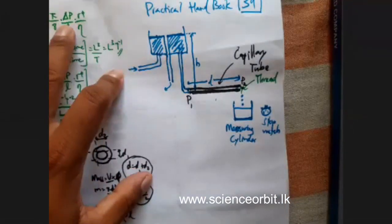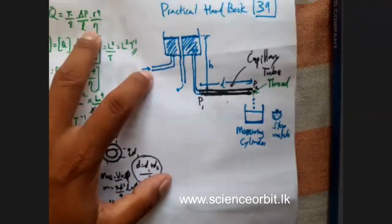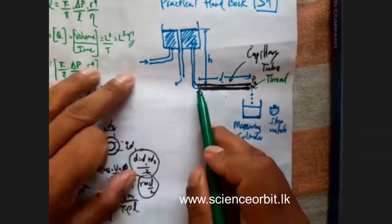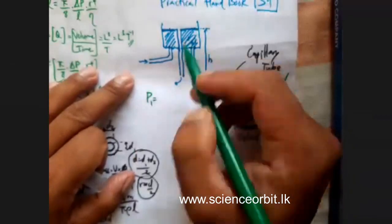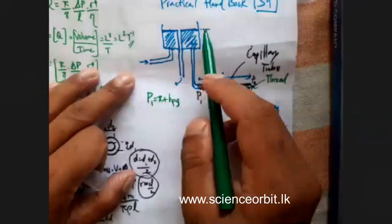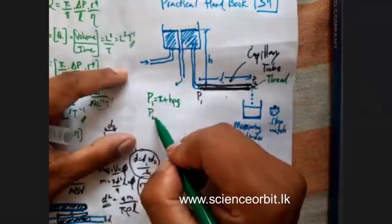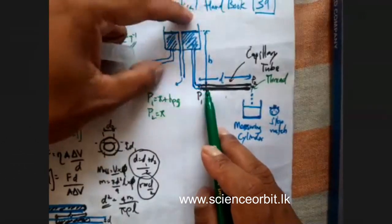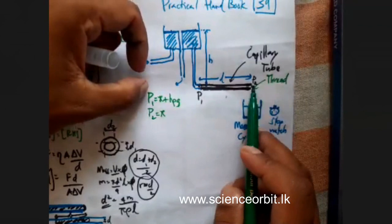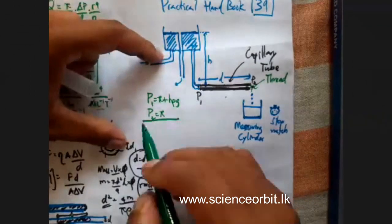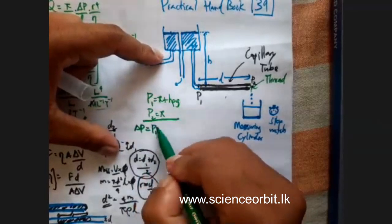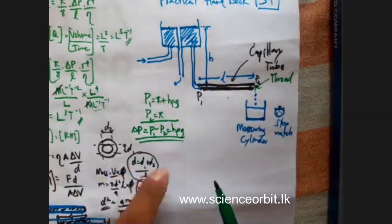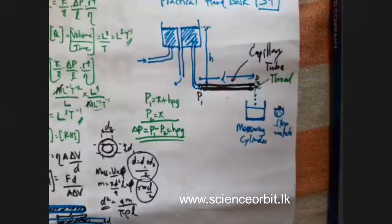Our purpose is finding eta, so let's talk about pressure difference. Pressure at P1 is atmospheric pressure plus H-rho-g. Pressure at P2 is a point exposed to air, so P2 is atmospheric pressure. Therefore delta P equals P1 minus P2 equals H-rho-g. So you can use H-rho-g directly instead of delta P.